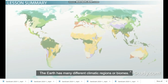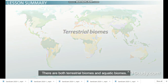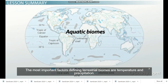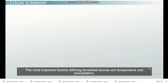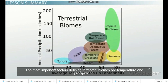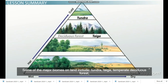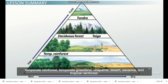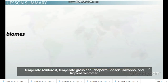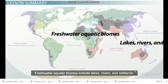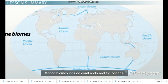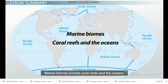The Earth has many different climatic regions, or biomes. There are both terrestrial biomes and aquatic biomes. The most important factors defining terrestrial biomes are temperature and precipitation. Some of the major biomes on land include tundra, taiga, temperate deciduous forest, temperate rainforest, temperate grassland, chaparral, desert, savanna, and tropical rainforest. Freshwater aquatic biomes include lakes, rivers, and wetlands. Marine biomes include coral reefs and the oceans. Estuaries are where freshwater mixes with saltwater.